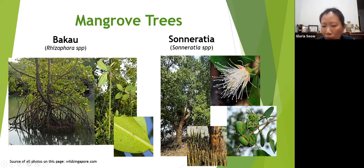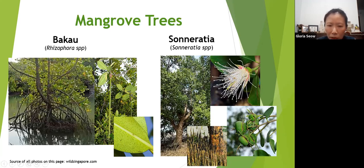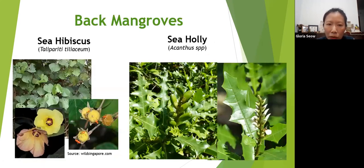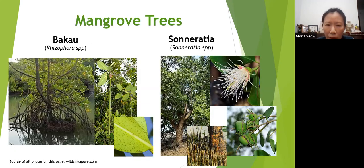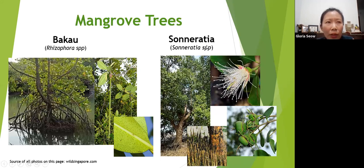Sonneratia has cone roots — they look like pencils but a bit fatter at the base — and pom-pom kind of flowers that open only at night. They are a food source for bats and moths. The fruits don't grow very long roots so they are more apple-shaped. All these are aerial roots that can breathe air directly. Avicennia and Sonneratia attract fireflies and are usually the first to arrive on newly formed mud toward the seaward side, while bakau normally grow further inward.